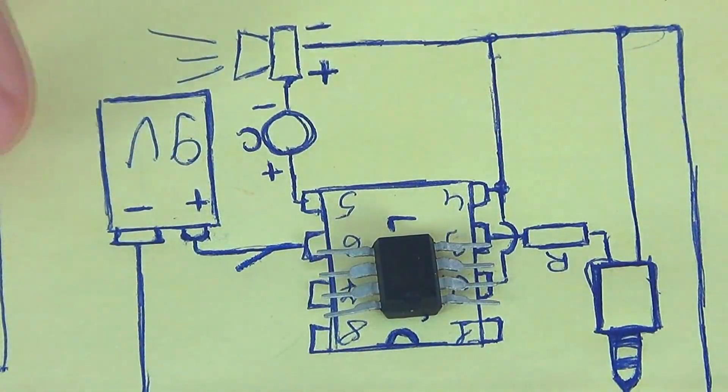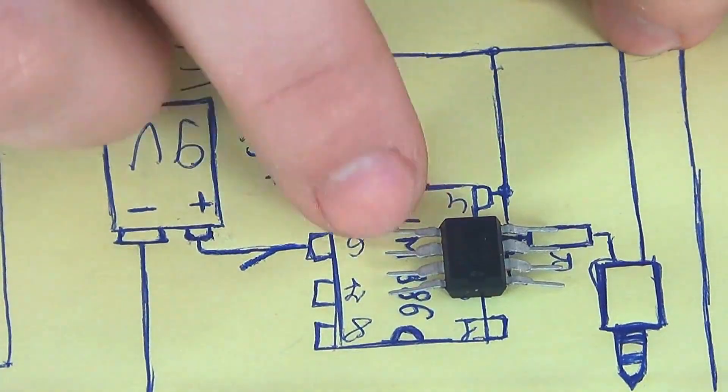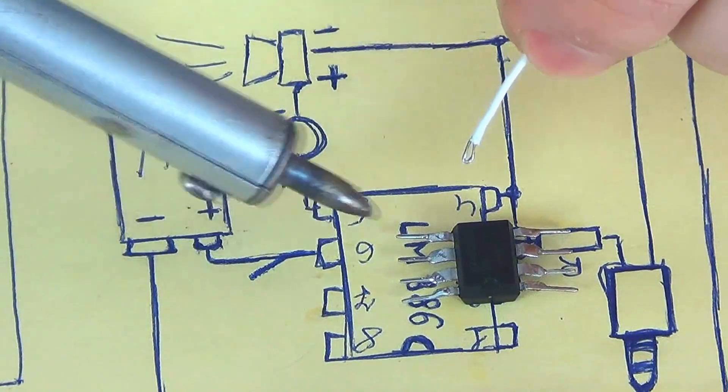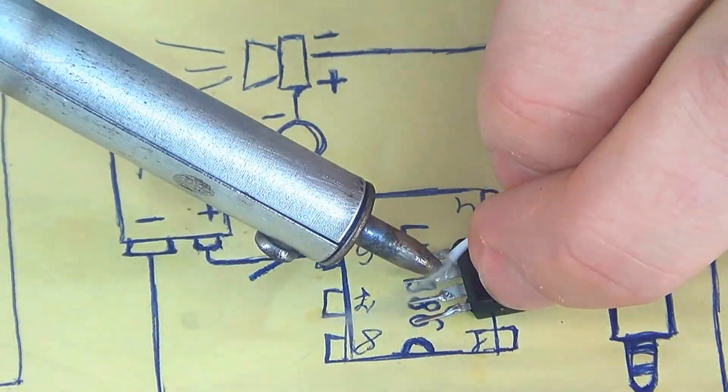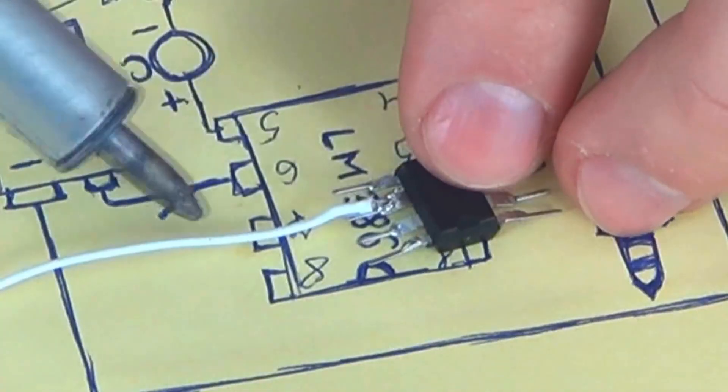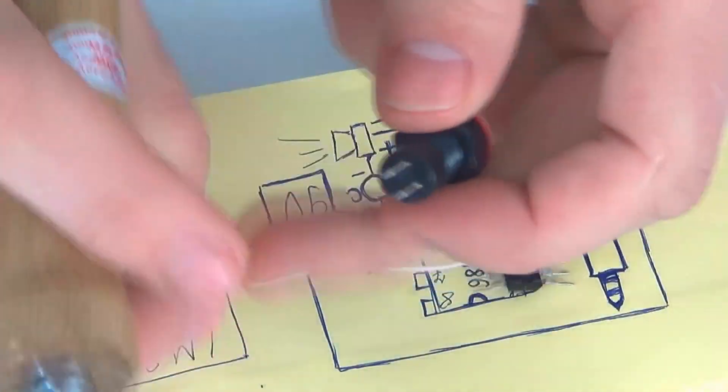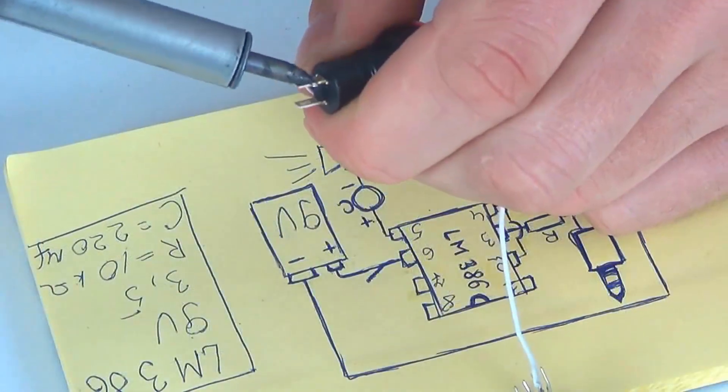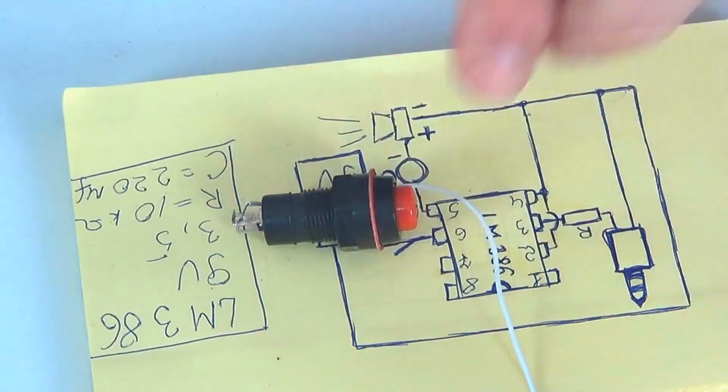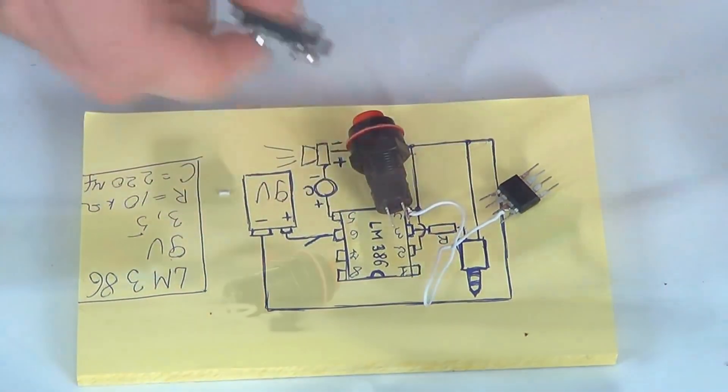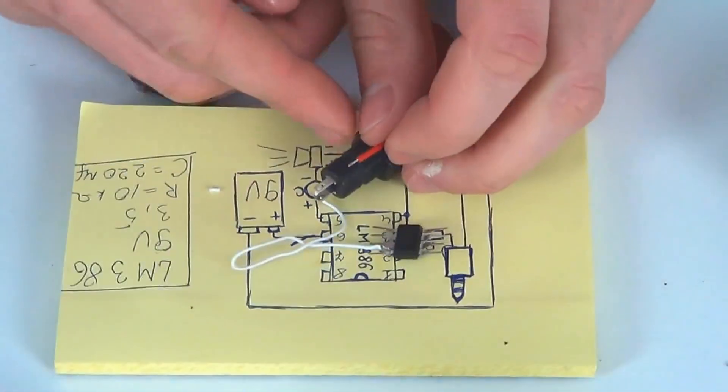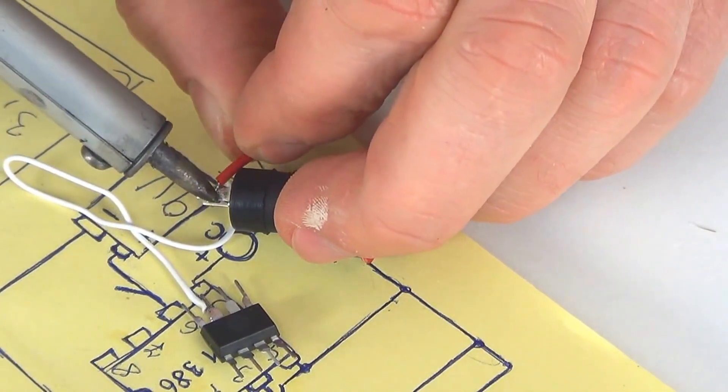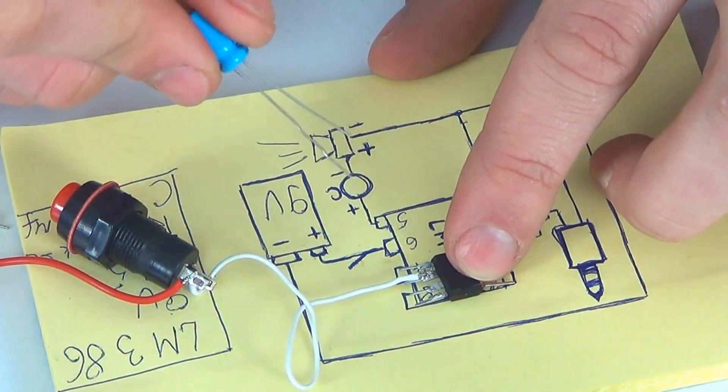Let's start step by step. You see that number 6 is the next to last contact on the right. We solder one wire to it. Then, this wire should be linked to a switch. So we solder it to the switch. The second wire from the switch should be linked with the plus of the battery connector.